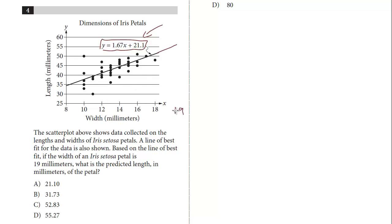We know X is the width, so we're going to just plug in a 19. So then we'll get Y equals 1.67 times 19, plus the constant. The Y-intercept is 21.1.